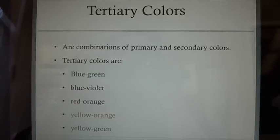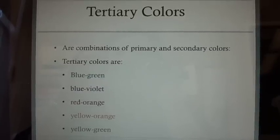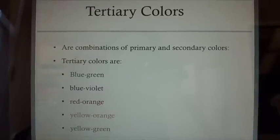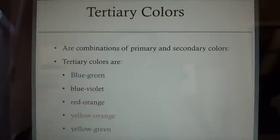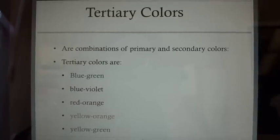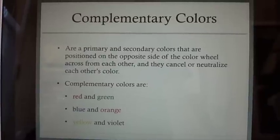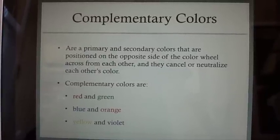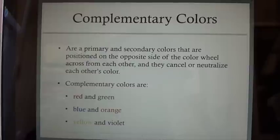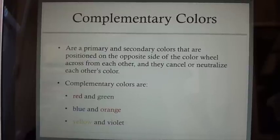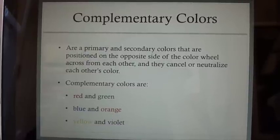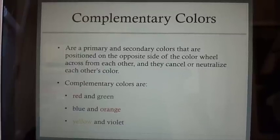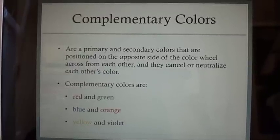Tertiary colors are combinations of primary and secondary colors. Tertiary colors are blue-green, blue-violet, red-orange, yellow-orange, and yellow-green. Complementary colors are primary and secondary colors that are positioned on the opposite side of the color wheel, across from each other, and they cancel or neutralize each other's color. Complementary colors are red and green, blue and orange, and yellow and violet.